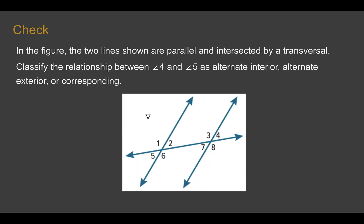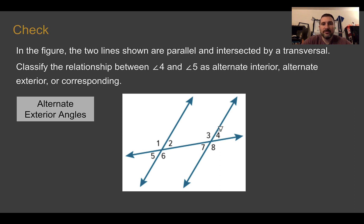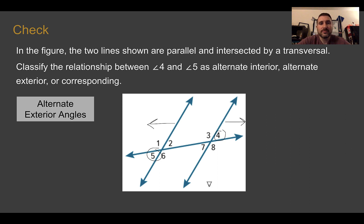Check your understanding again. Looking at the picture, decide if angles four and five are alternate interior, alternate exterior, or corresponding. Pause the video and complete the check. This time they are alternate exterior angles. The parallel lines are turned, so we need to look at those parallel lines carefully — angles four and five are on the outsides of the parallel lines but on opposite sides of the transversal, making them alternate exterior angles.